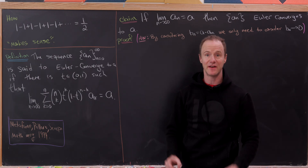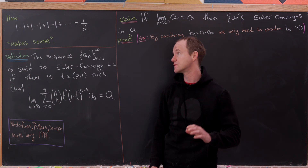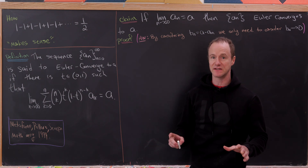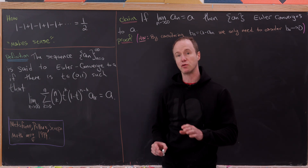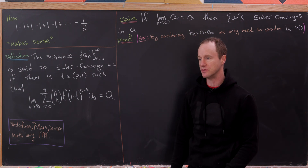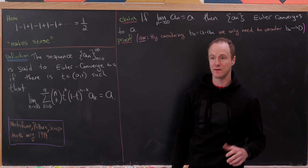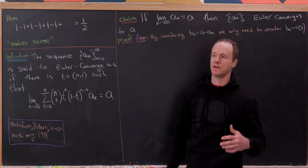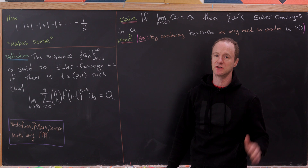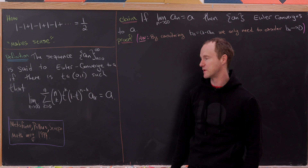Today we're going to look at a certain internet-famous sum: 1 minus 1 plus 1 minus 1 plus 1 minus 1 and so on. We're going to show that in some sense the value of this sum is equal to one half. While this value is not traditionally what it would converge to, these ideas are really helpful when it comes to understanding something like the Riemann zeta function. In fact, the famous formula that 1 plus 2 plus 3 plus 4 and so on equals minus 1 over 12 — we're not going to talk about that today. We're going to focus on this series and making this formula make sense.